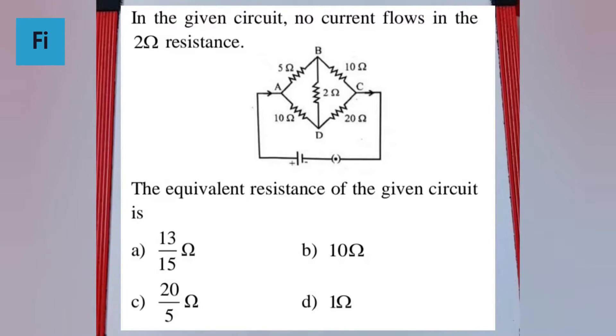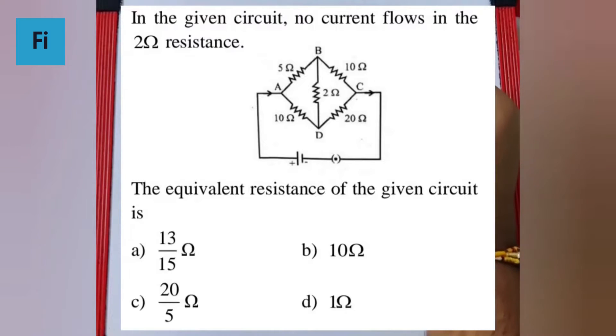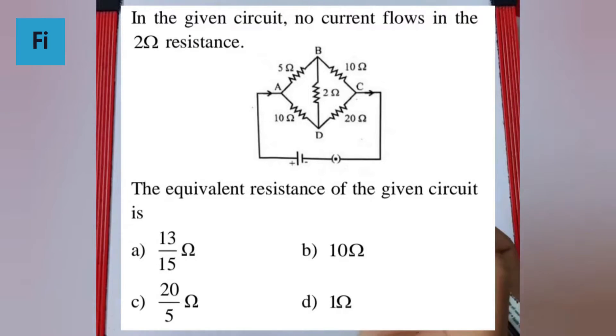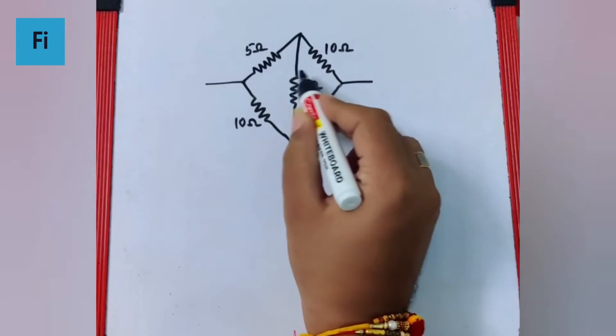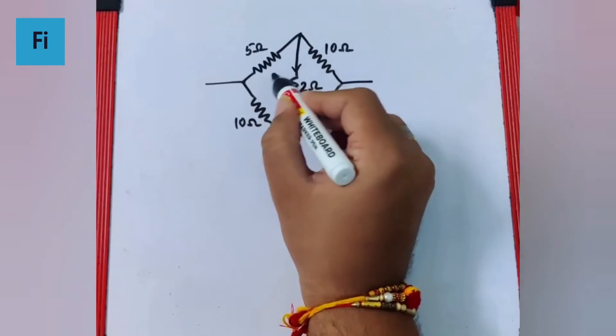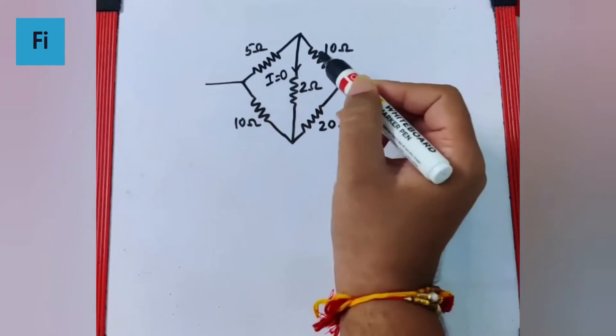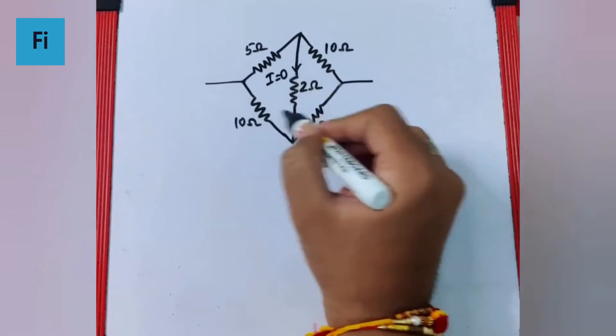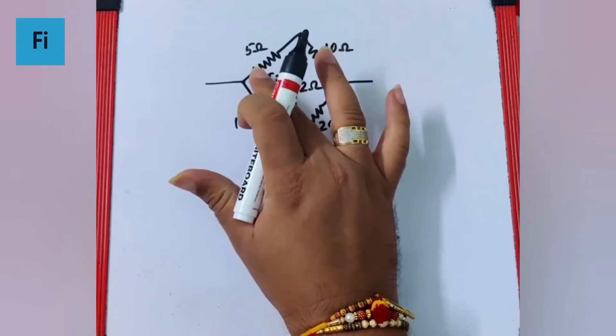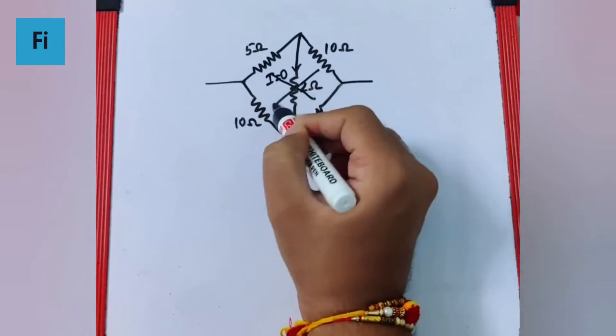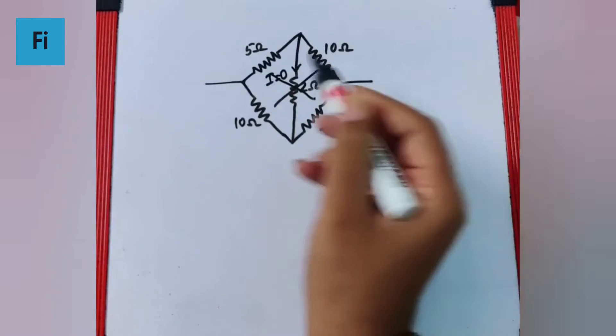The question says in the given circuit no current flows in the 2 ohm resistance. The equivalent resistance of the given circuit is... if there is no current flowing through this, then this circuit is redundant. We can just remove it. Okay, if that is the case, I can say